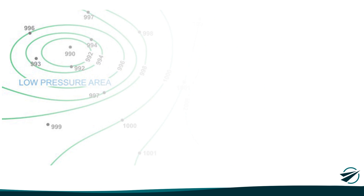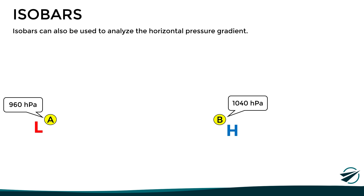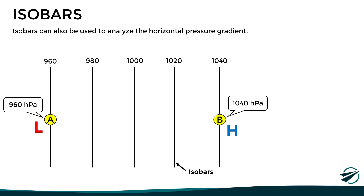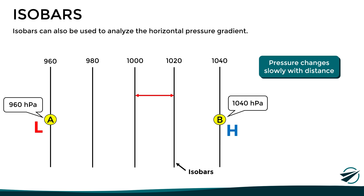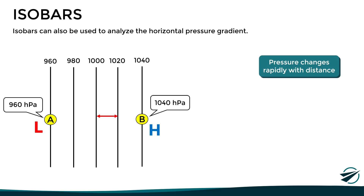Just as we used isobars to analyze pressure vertically, we can also use them for the horizontal pressure gradient. With point A at 960 and point B at 1040, the isobars in between determine how fast the pressure changes with distance. If the isobars are widely spaced apart, there is a low horizontal pressure gradient and the pressure changes slowly with distance. If the isobars are closer together, it represents a higher horizontal pressure gradient, resulting in a more rapid pressure change with distance.